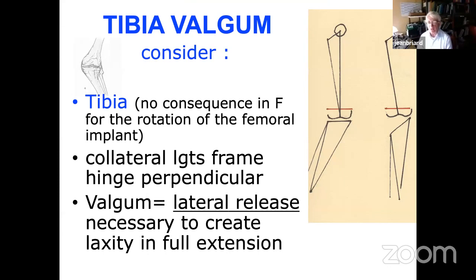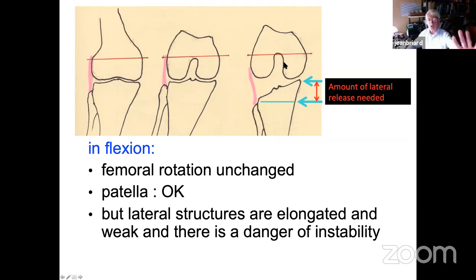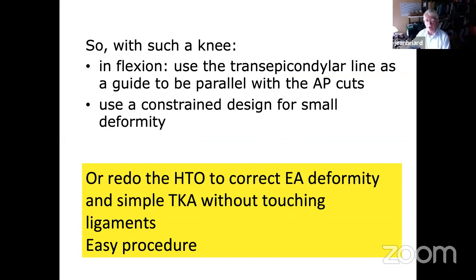Tibia valga after high tibial osteotomy: we say it's not so difficult — no consequence in flexion. But when there is a significant overcorrection, cutting will create huge laxity immediately. If you try to lengthen the lateral structures significantly, you end up with weak lateral structures and lateral instability in flexion. If the deformity is not severe, you can use the transepicondylar line in flexion with independent cut and a constrained design. But most often, the simple answer is to redo the HTO — keep the joint with good ligaments.